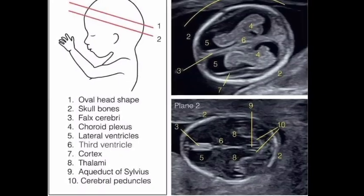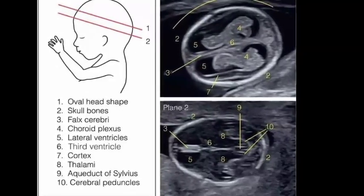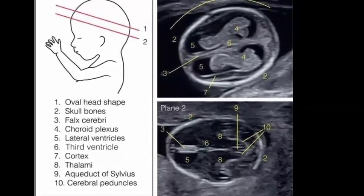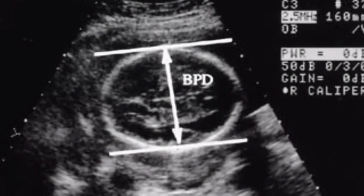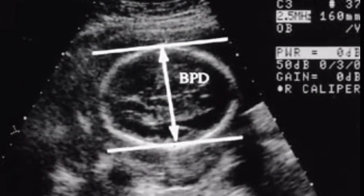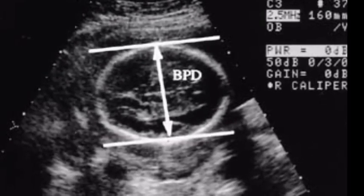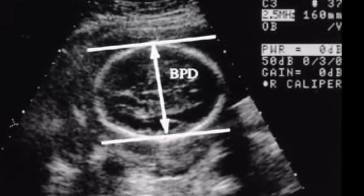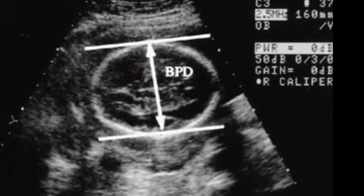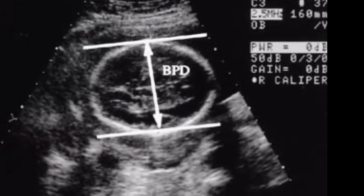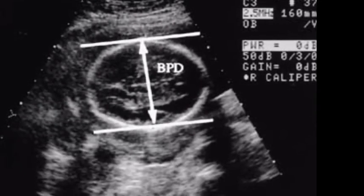Fetal head size has been one of the most useful and proven measurements to determine gestational age. The biparietal diameter is the most widely used measure, with greatest accuracy between 12 and 22 weeks, declining after this period because of wider individual variation. The biparietal diameter demonstrates linear growth of 3 mm per week from weeks 14 to 28, and 2 mm per week until term.